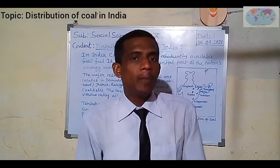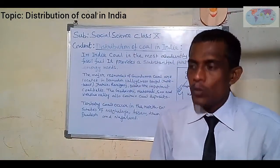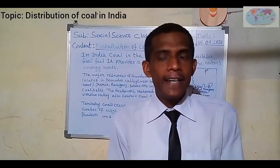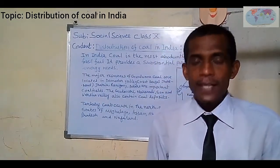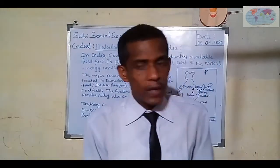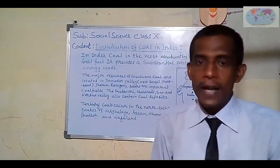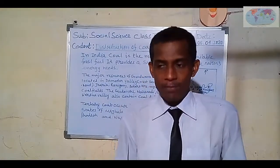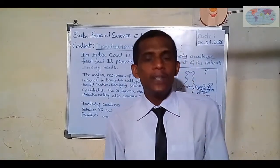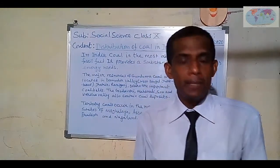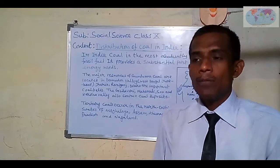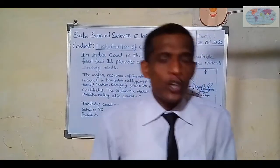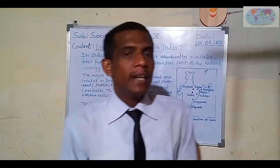The name Gondwana derives from Gondwana land. According to the continental drift theory, the supercontinent divided into two major parts: the northern part, also known as Laurasia, and the southern part, also known as Gondwana land. Gondwana land also derives from the Gond tribe, who are available mainly in southern India. Gondwana coal is one of the most important coals. According to carbon content, coals are mainly four types.